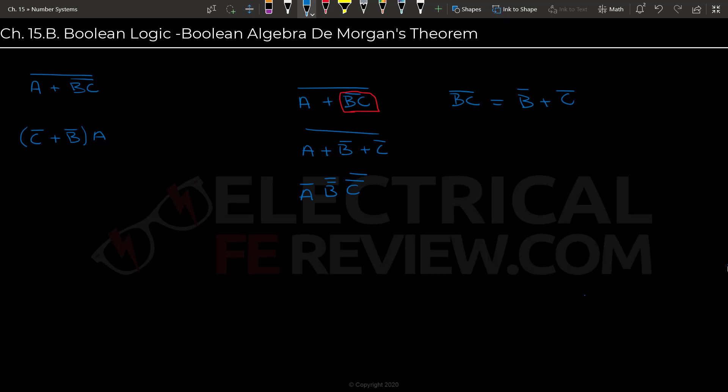you're going to have a double inverse, which brings it back to B and C. So then the final answer will be A NOT, B, C.